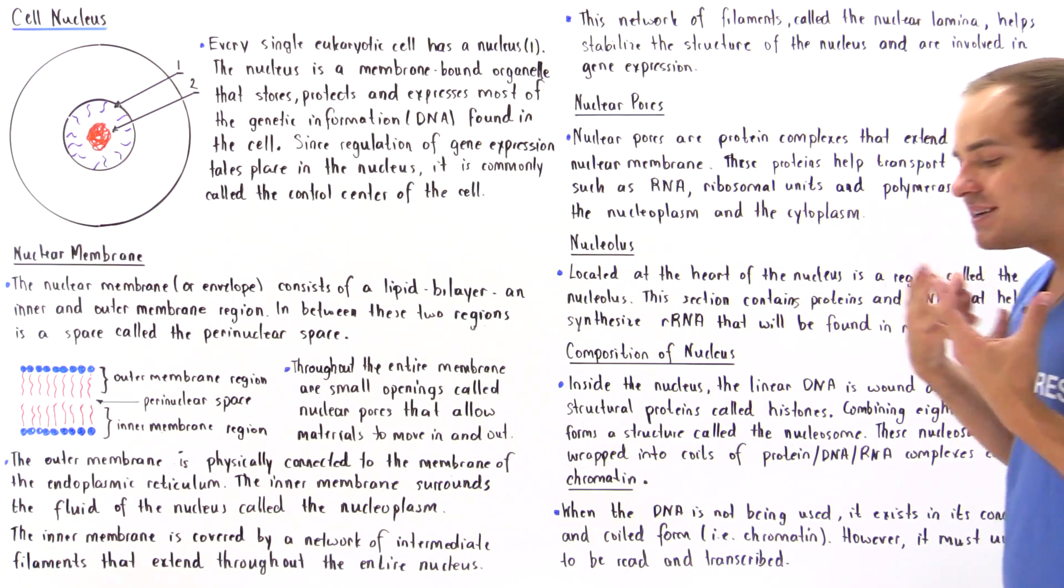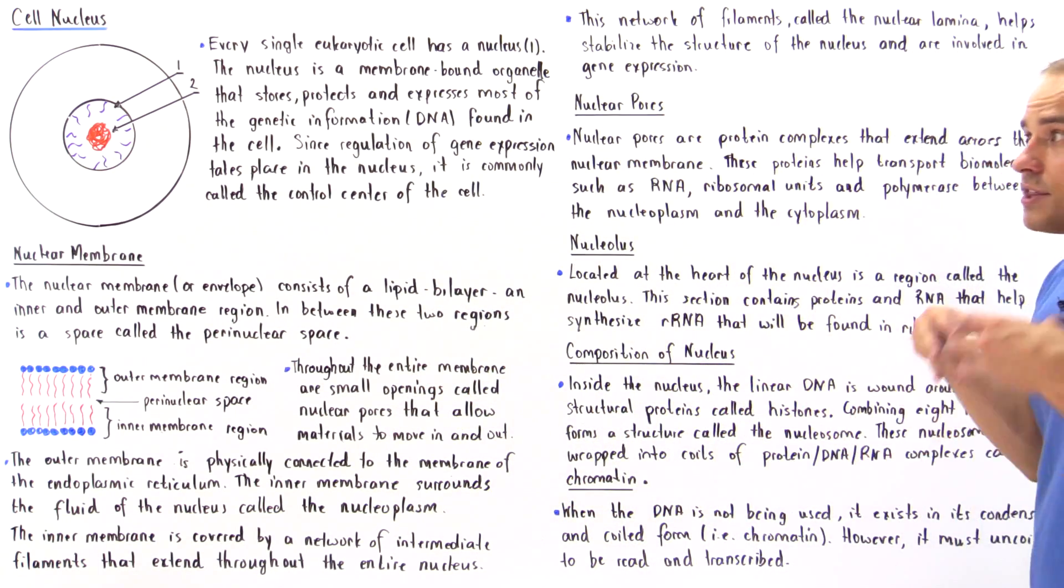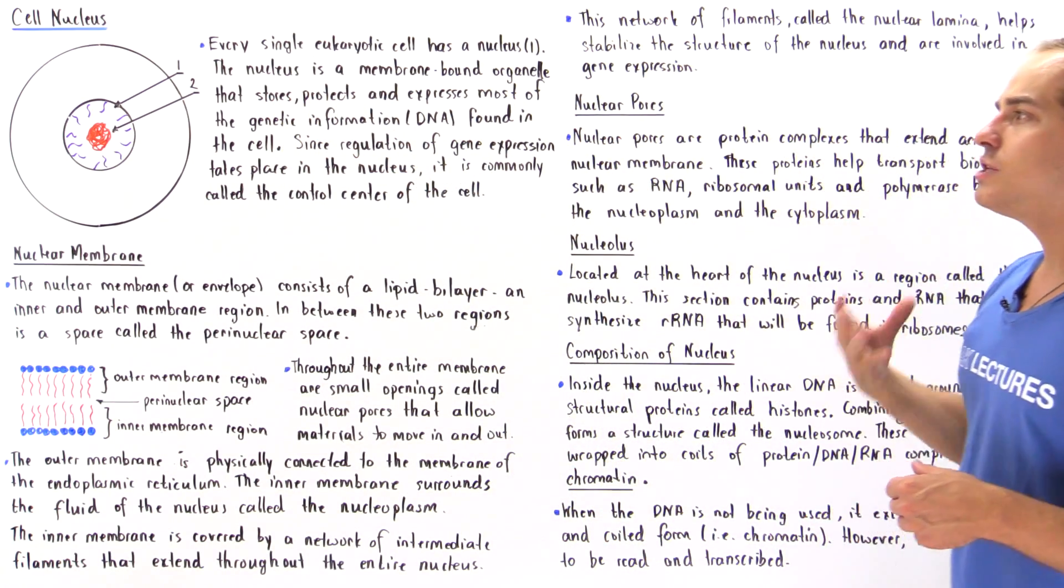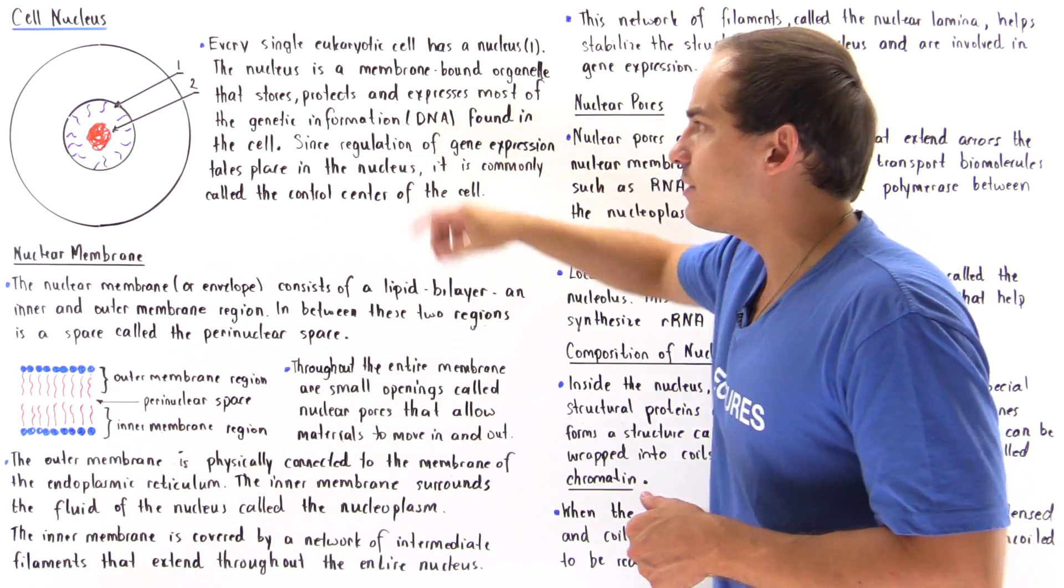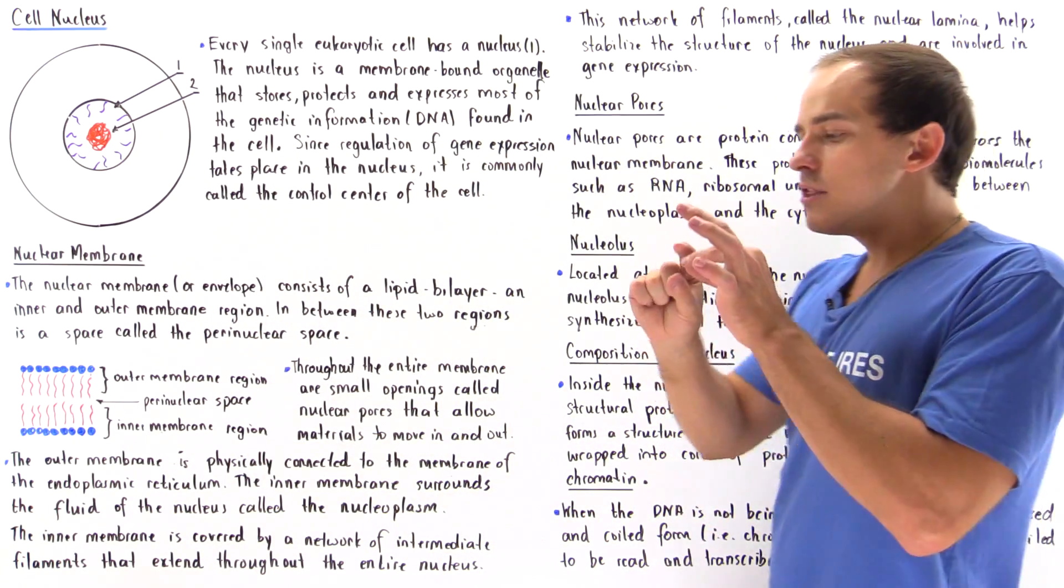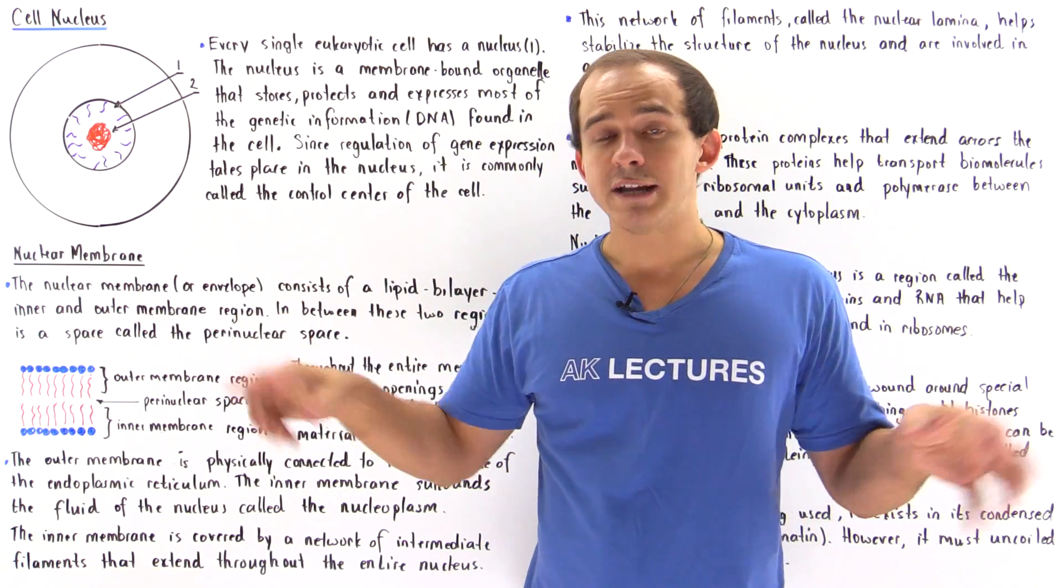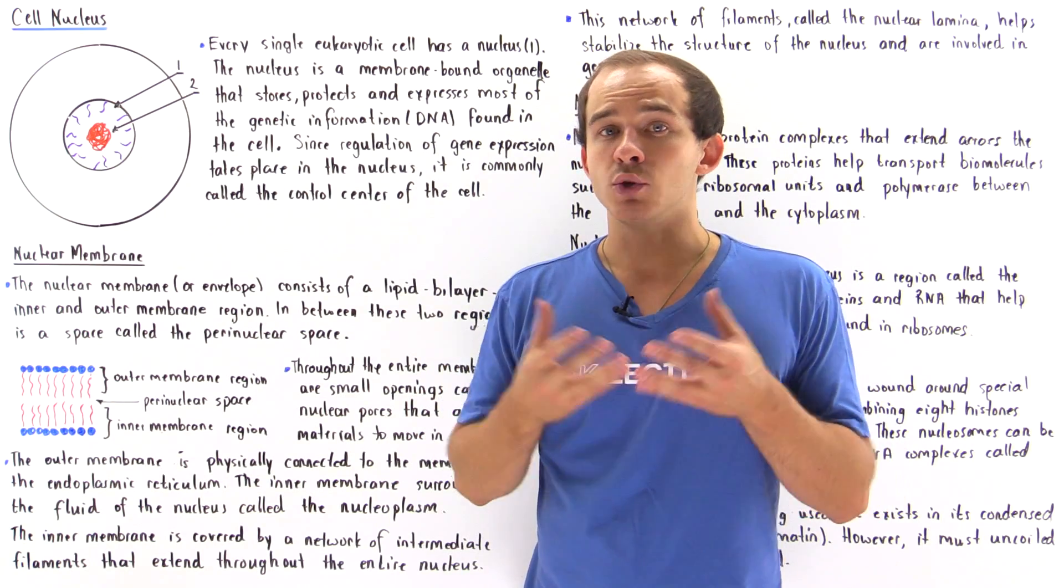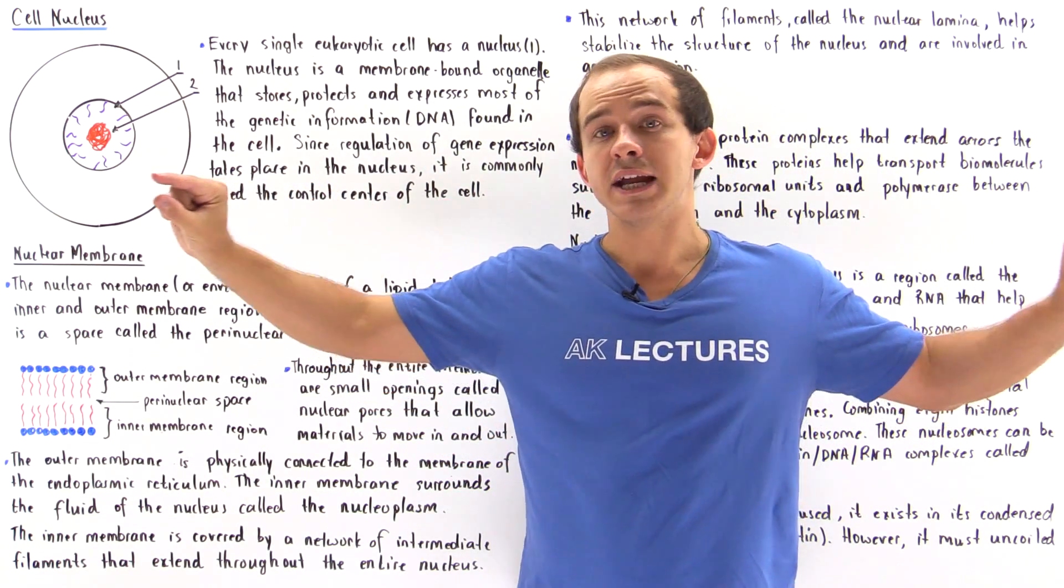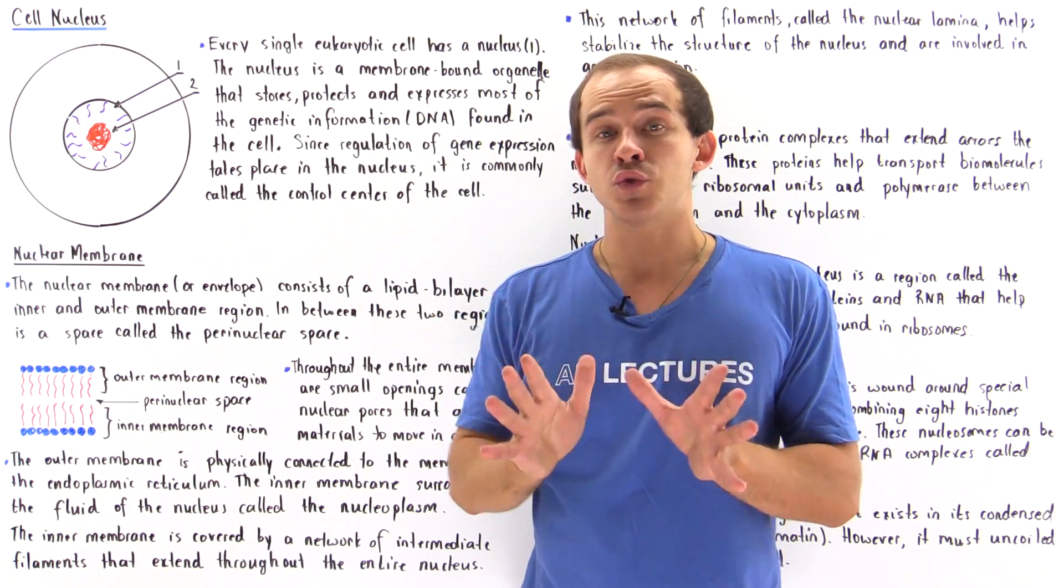Let's discuss the composition of DNA inside the nucleus. Earlier we said the entire purpose of the nucleus is to store, protect, and express our genetic information, the DNA, the deoxyribonucleic acid. The problem is the linear version of DNA is extremely long. In fact, if we take a single DNA molecule found inside the human cell and extend it in a linear fashion, it will be over five feet long.